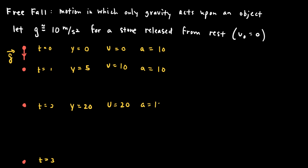The acceleration is still 10 m/s². The velocity increases by 10 again, reaching 30 m/s at t = 3. If the object starts at 20 m/s and ends at 30 m/s, the average velocity in that interval was 25 m/s. So the object travels an additional 25 meters, putting it at a position of y = 45.